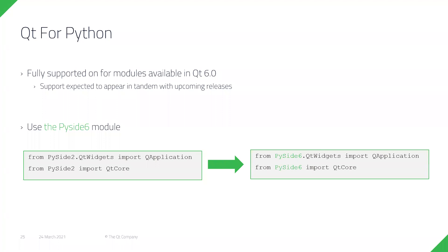Python is already supported in Qt6.0 — everything supported on the C++ side in 6.0 is also supported in Python. The only thing you need to do is update your import statements: instead of using PySide2, you'll import from PySide6. The naming change from PySide2 to PySide6 may seem odd, but PySide2 was a confusing name as it seemed to relate to Python 2, even though it was actually Qt for Python supporting Qt5. Hopefully PySide6 is more clear that it corresponds to Qt6.